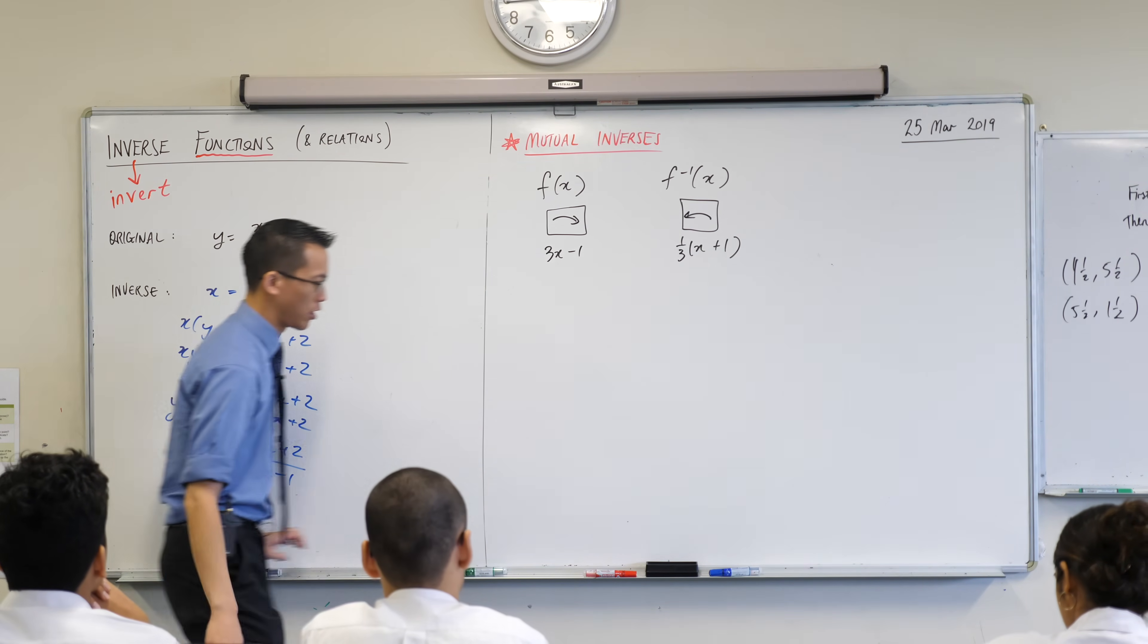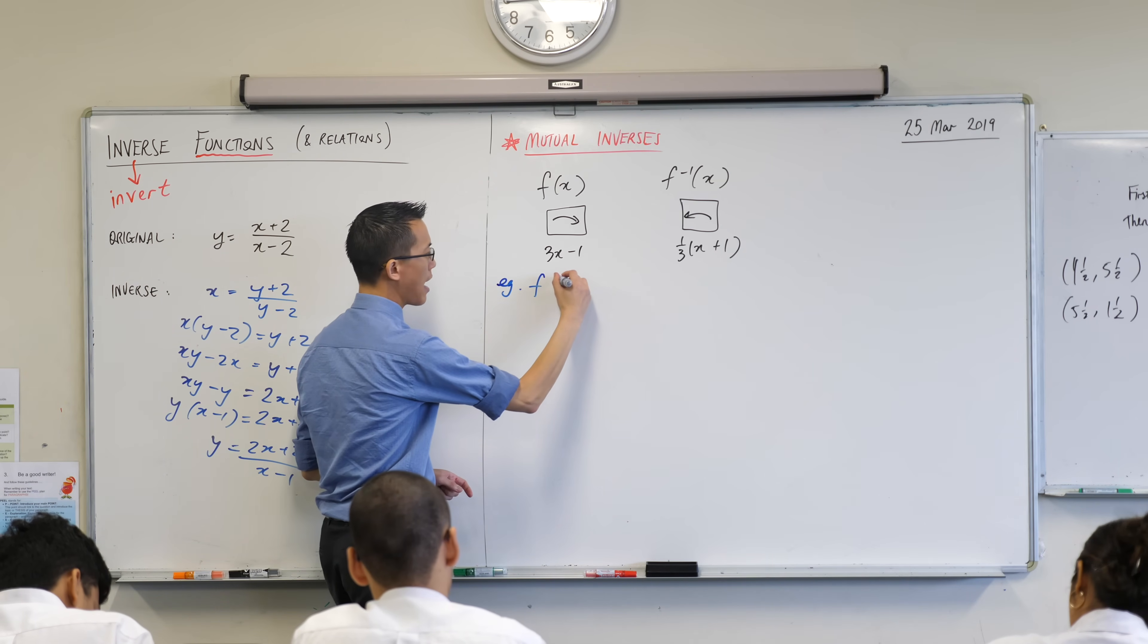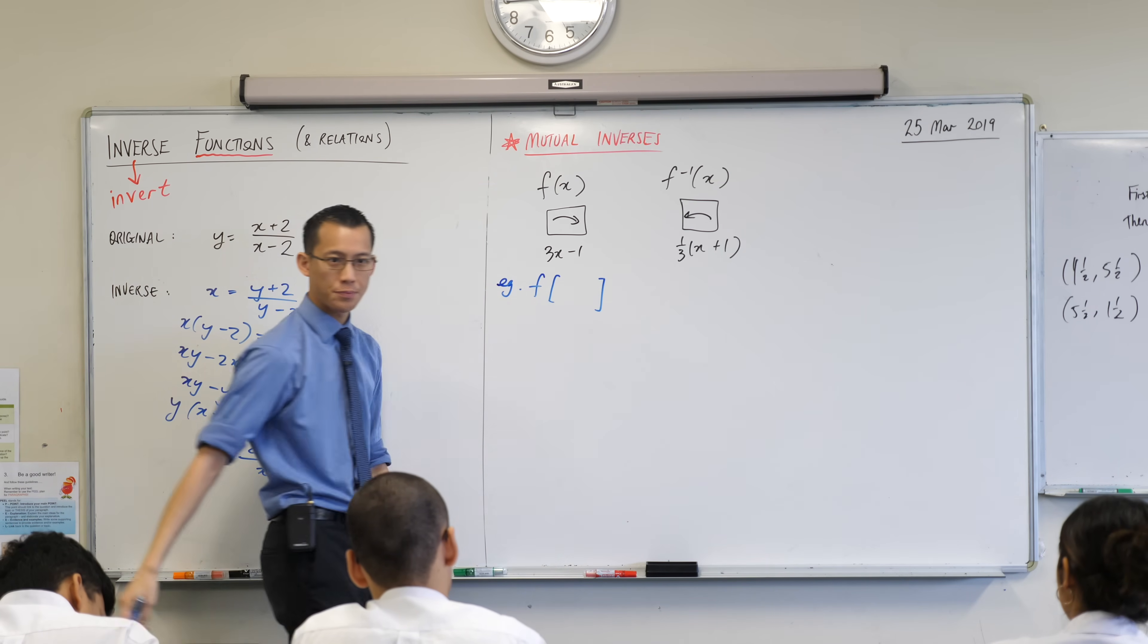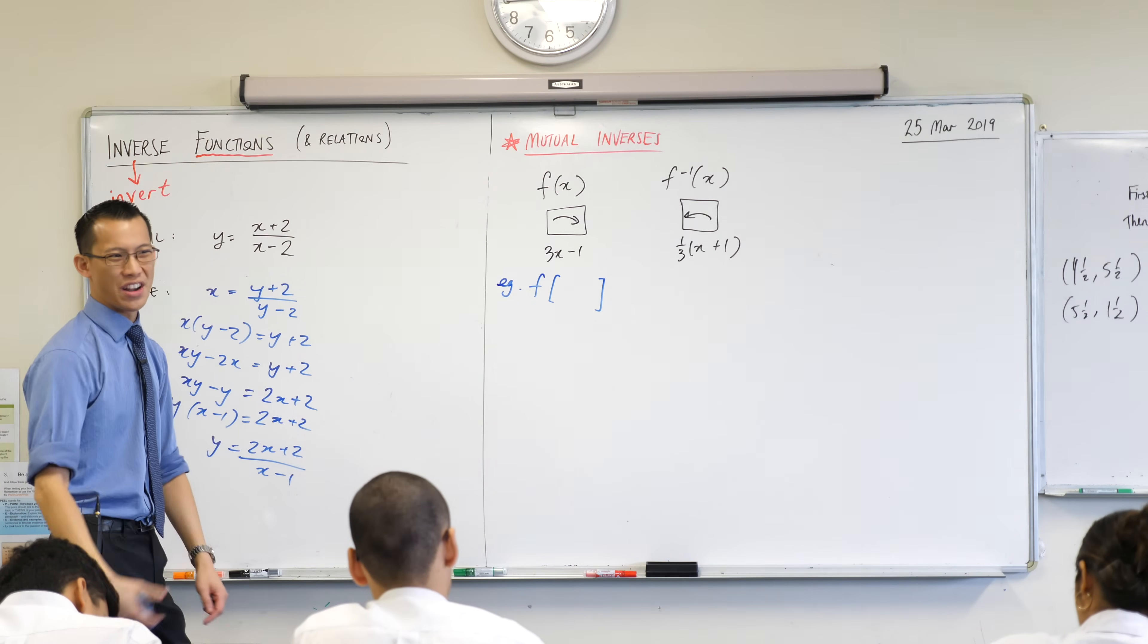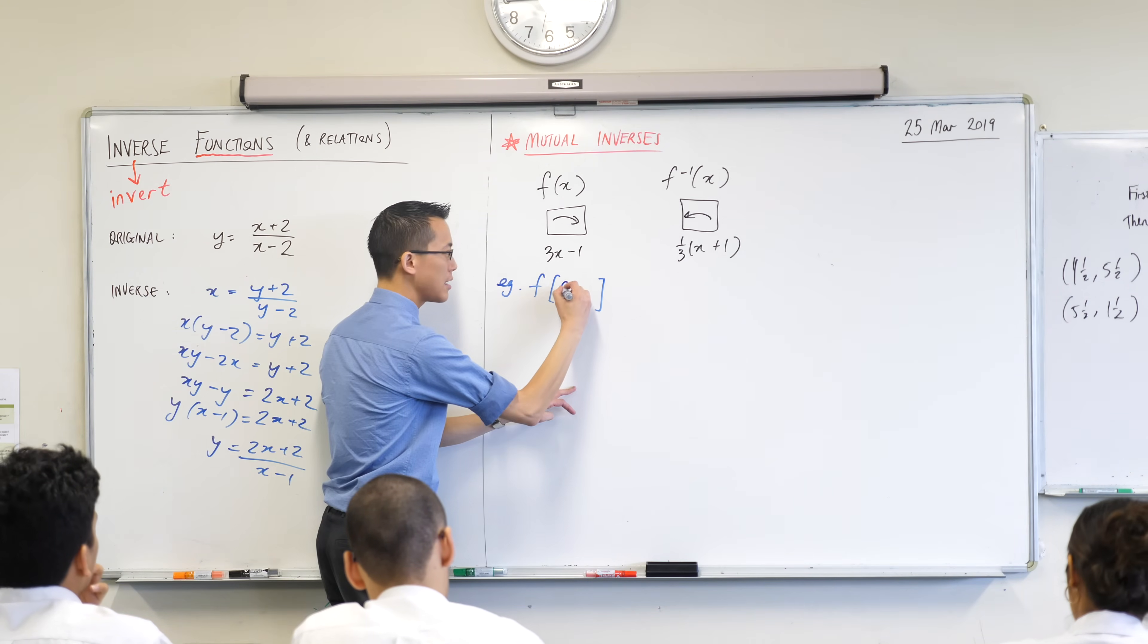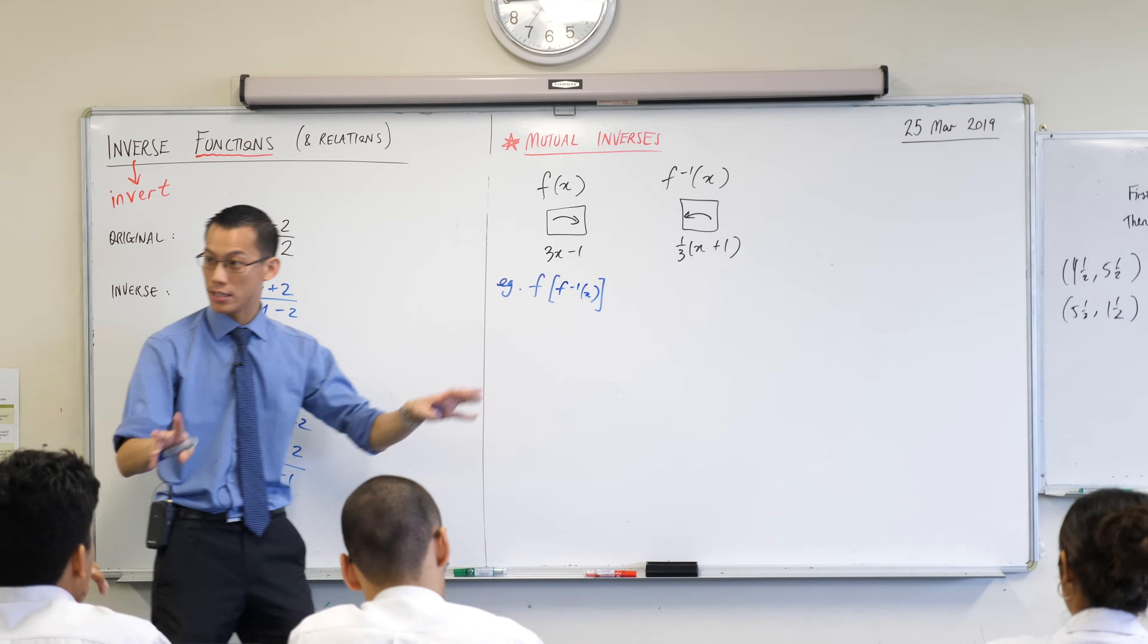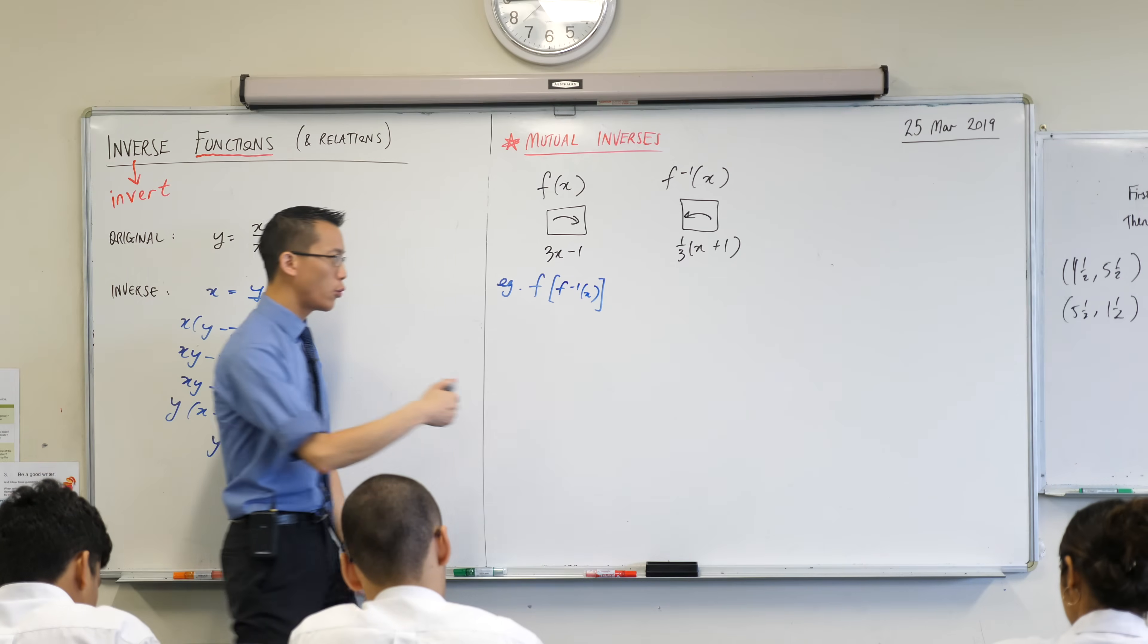So underneath where you've got this, just write down with me. As an example, if you take f(x) but instead of putting in x or a number like 3 or 8 or something like that, if what you put into f(x) is its inverse. That's why I've got these big square brackets so I can distinguish between them. Something weird happens, watch this.